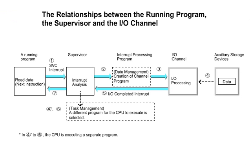The illustration shows the relationships between the running program, the supervisor, and the I/O channel. After an I/O request has been sent out and until the I/O processing is completed, the CPU is freed from this program and can execute a different program. The OS task management program does the switching of the program. Since the data management program does the I/O processing, its processing request needs to be issued to the supervisor. This request is called the supervisor call.